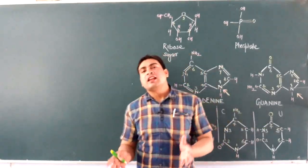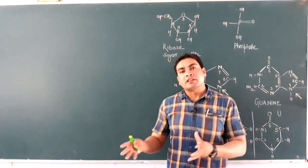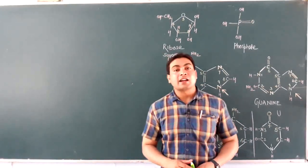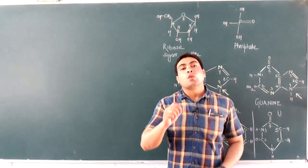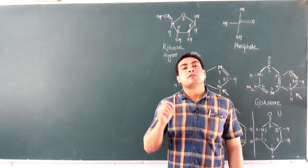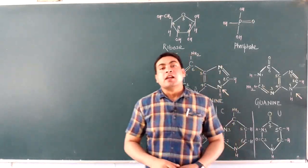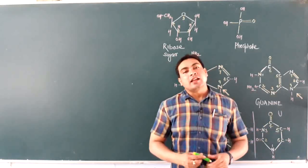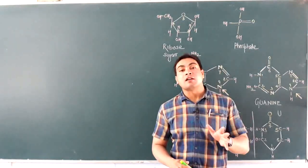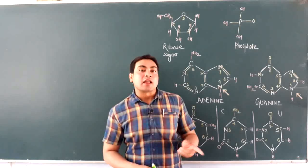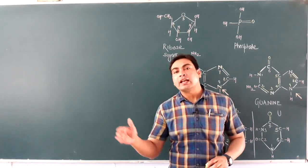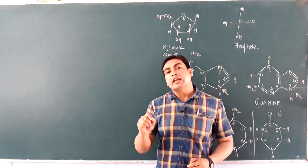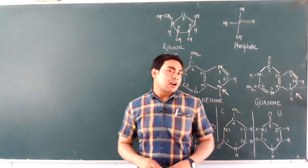First of all we are going to discuss about the history of the genetic material. The first important name is Frederick Miescher, who was the first person to isolate DNA from pus cells and named it Nuclein. Oscar Hertwig said nuclein are chemical substances responsible for inheritance of characters. Later, R. Altmann replaced 'Nuclein' with 'nucleic acids,' and Kornberg was responsible for synthesizing DNA in vitro in the laboratory.